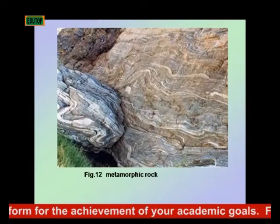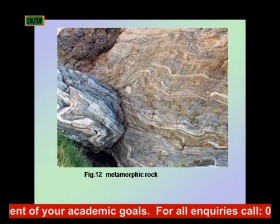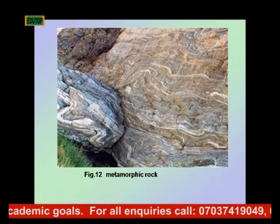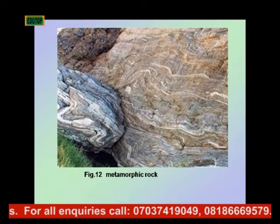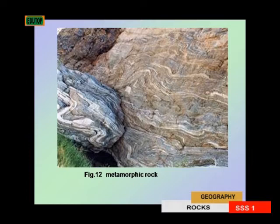Here is a very good depiction of what a metamorphic rock looks like. Because of the modification, you can see the wavy nature of that rock. This is because while it is undergoing change as a result of heat and pressure, the initial configuration of the rock tends to be deformed, and in that process we have the wavy nature as you can see from the diagram.